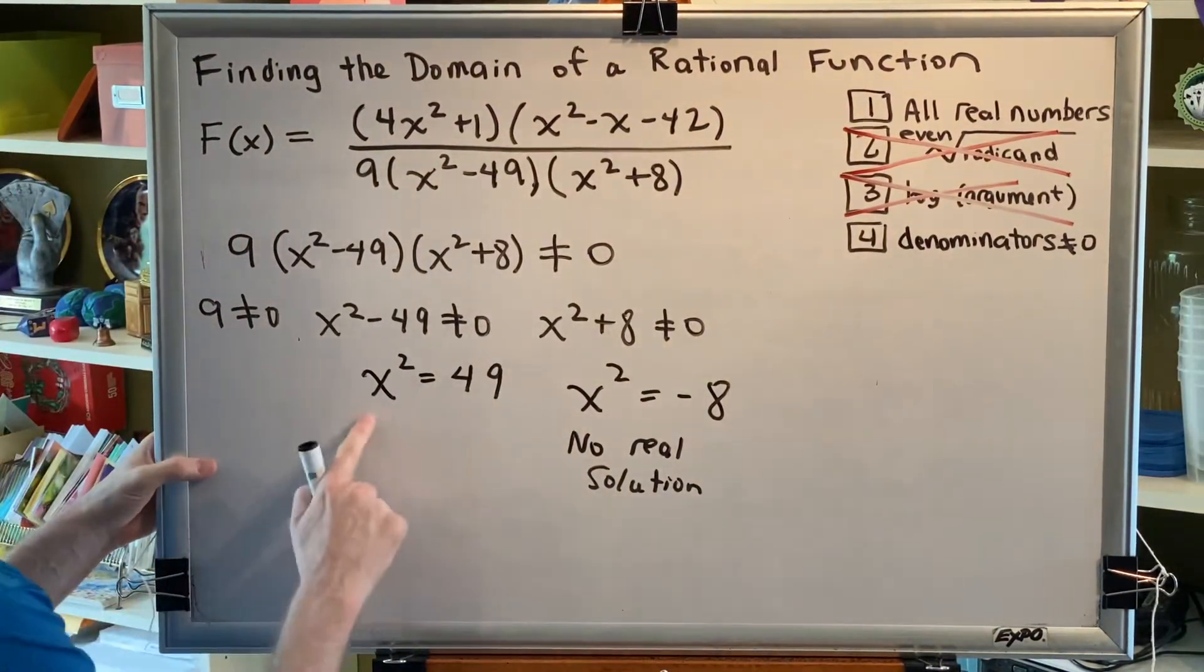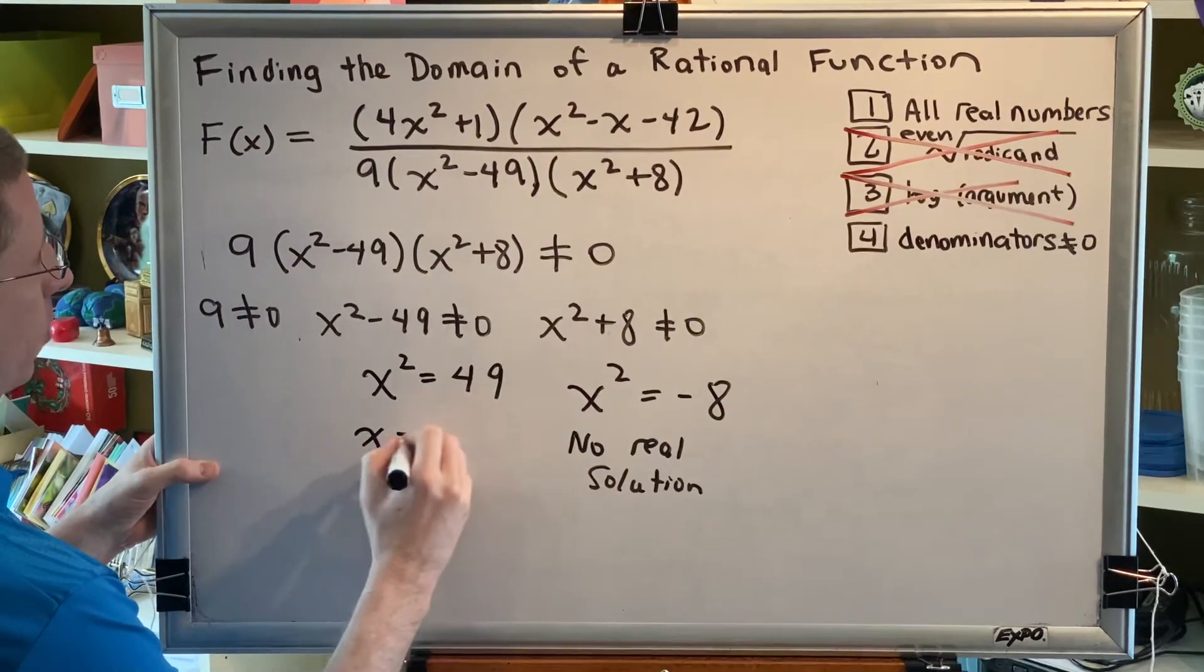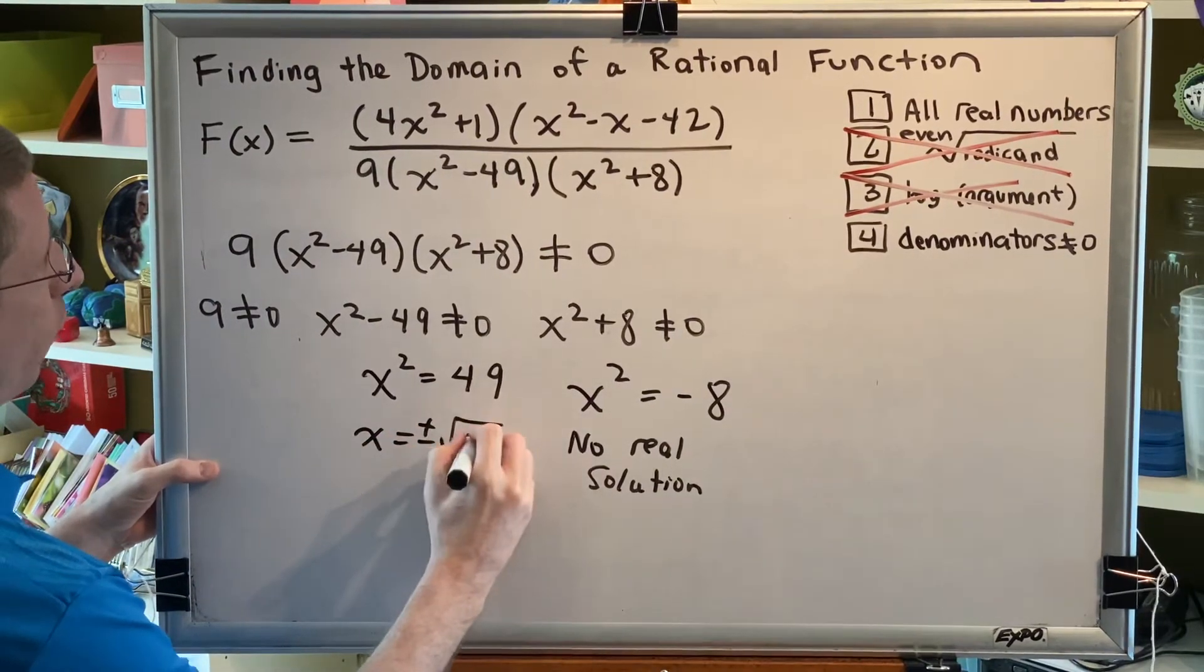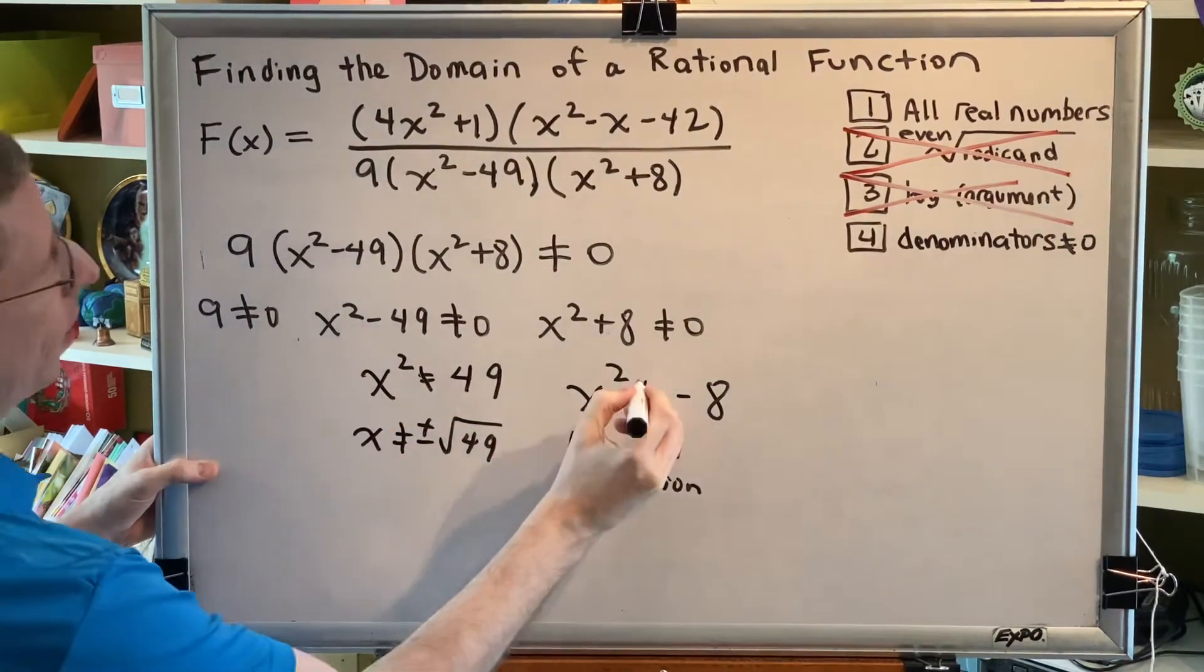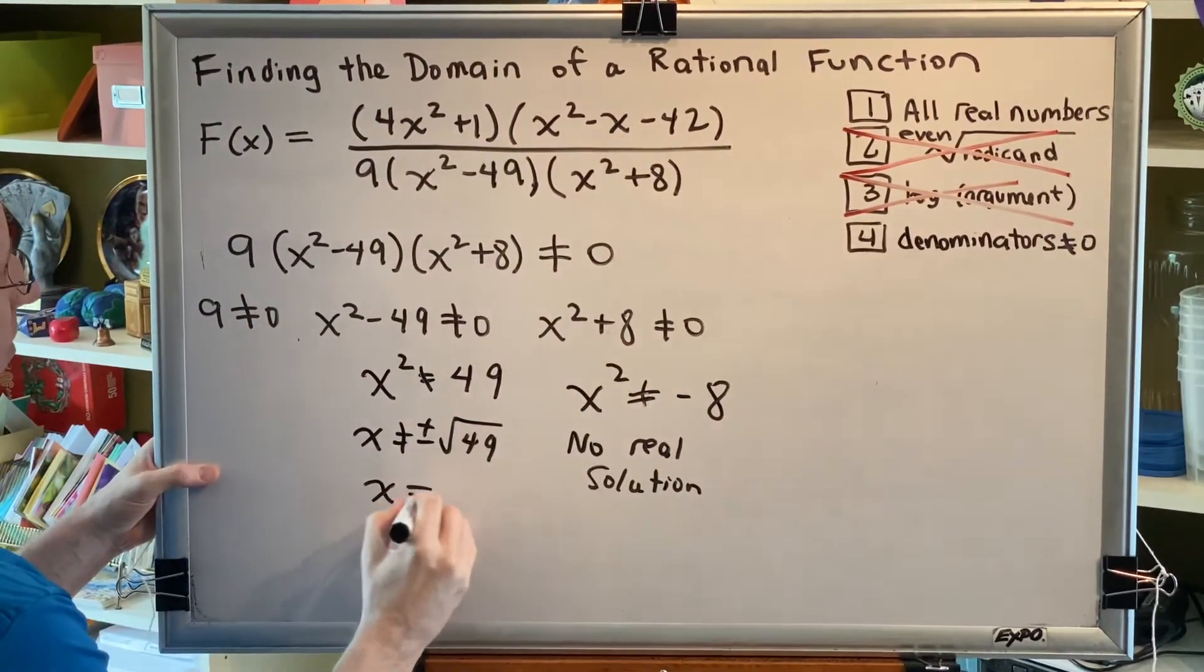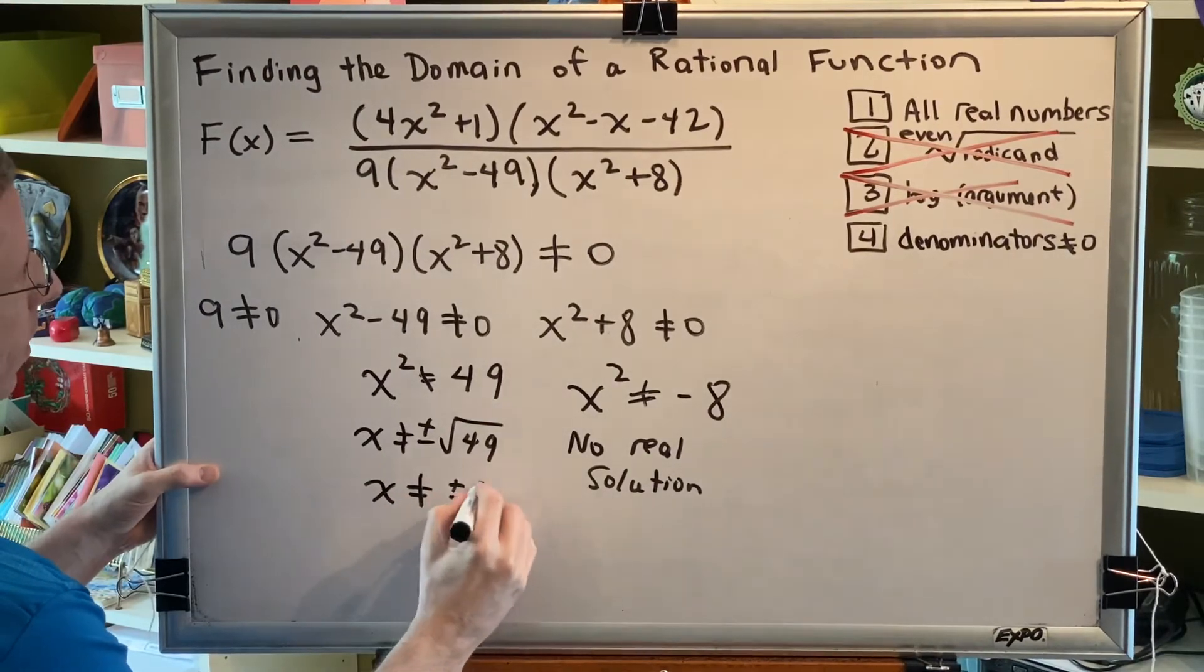But this will. By the square root property, x is not equal to plus or minus the square root of 49. Excuse me, not equal, not equal - I made an error there. I apologize. And then here, x ≠ ±7.